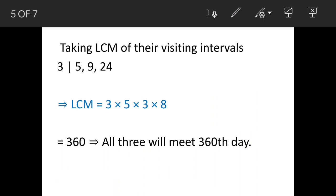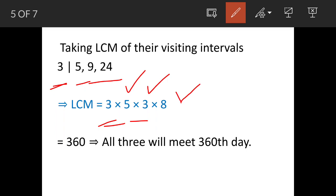Now we will take the LCM of 5, 9, and 24. The dividing factor is 3. So: 5 stays as it is, 9 divided by 3 is 3, and 24 divided by 3 is 8. When you multiply all of these — 3 × 5 × 3 × 8 — you get 360. That means after the 360th day they are meeting again. Now we have to find out which day the 360th day after the last Sunday they met will be.